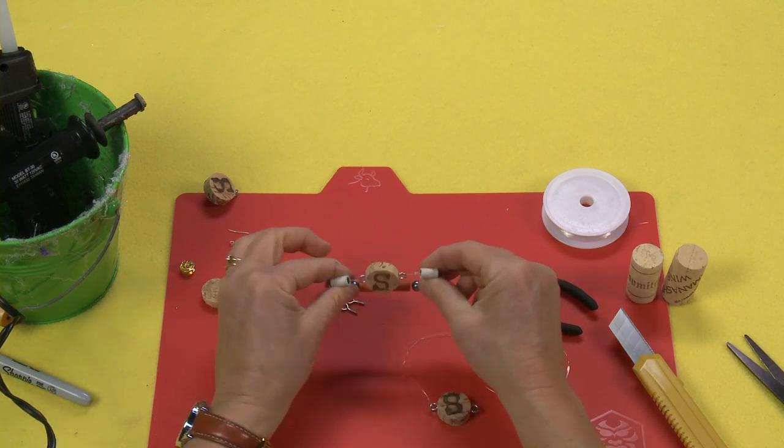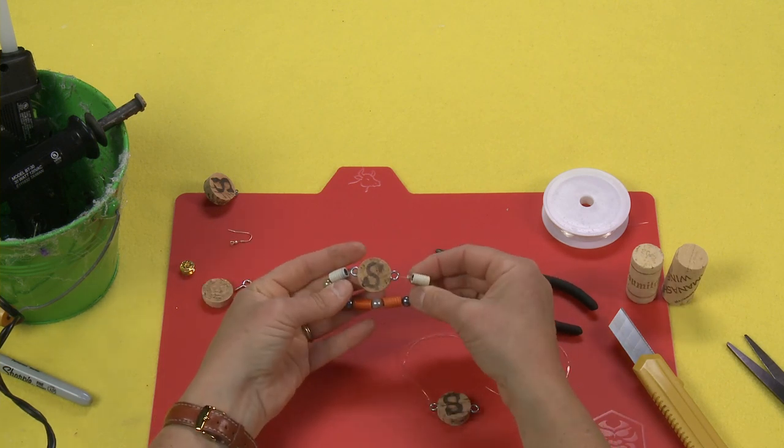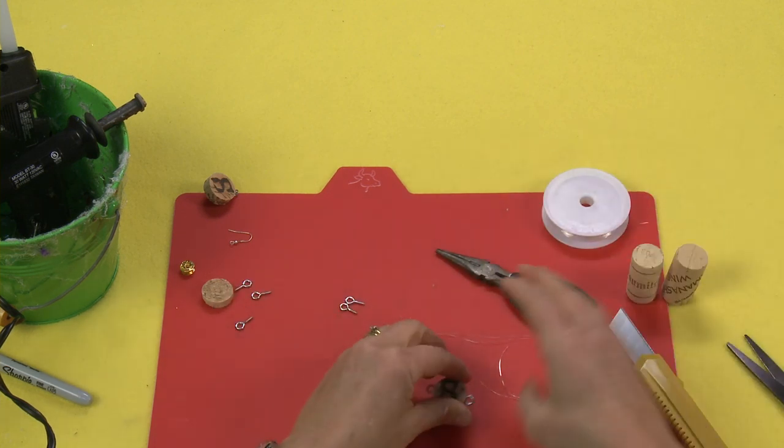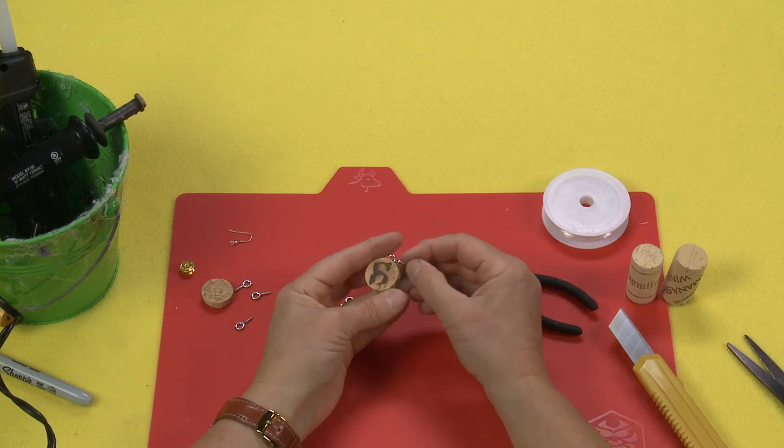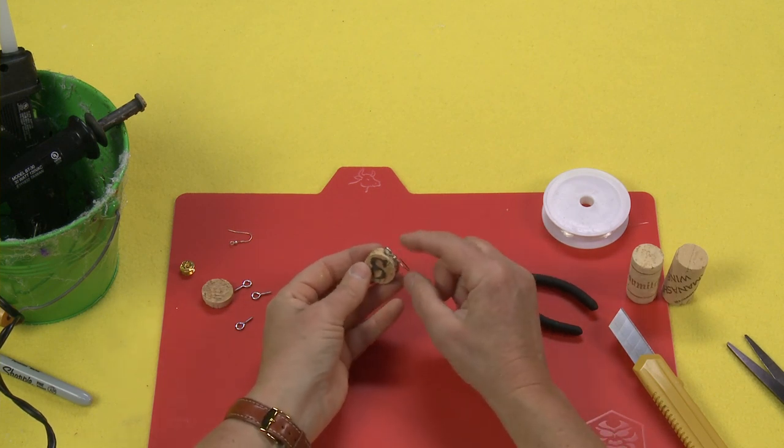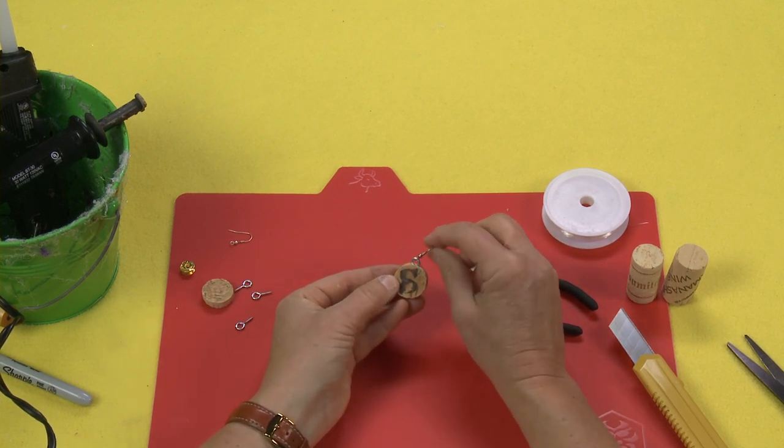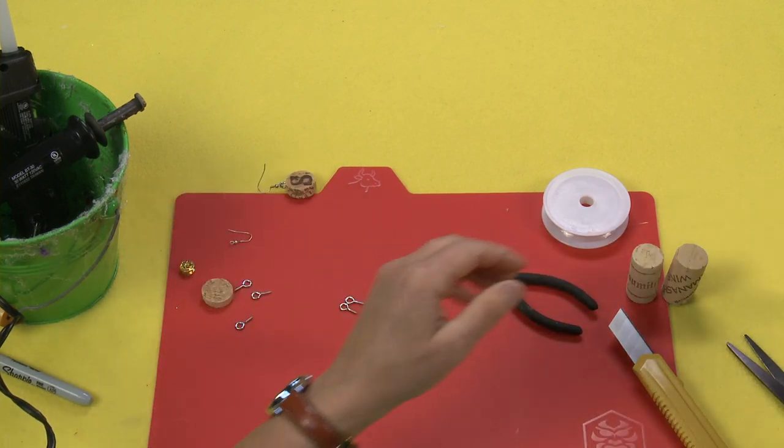For a necklace, very simple, you just make your screw eye in the top just like we did for the earring.